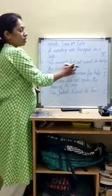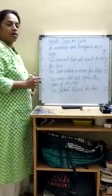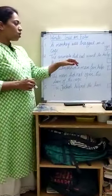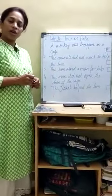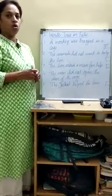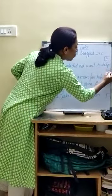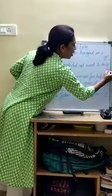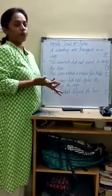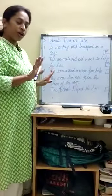Second: 'The animals did not want to help the lion.' Did the animals want to help the lion? No, they did not try to help him — it is true. Why were they not ready to help him? Because the lion is a very cruel animal and he may eat them. So they were scared of him and not ready to help.